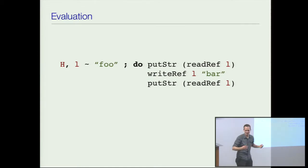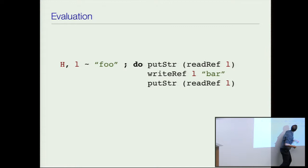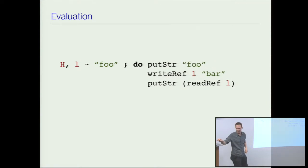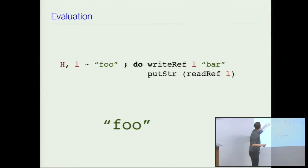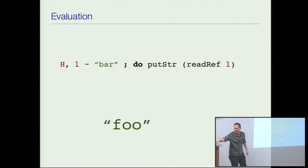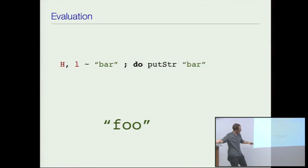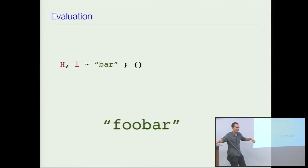The rest is obvious. When I read a reference L, I load foo into that position, and I get foo on the console. When I write a reference at location L, I change it to bar. There we go, now it's bar. Read the reference — it says bar.